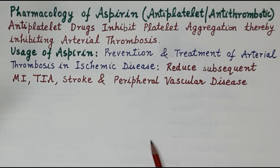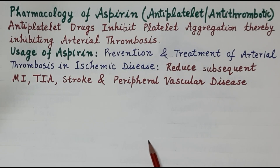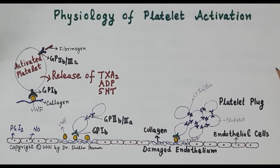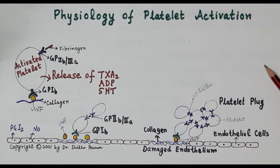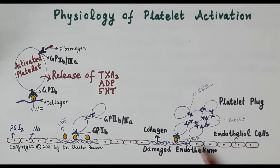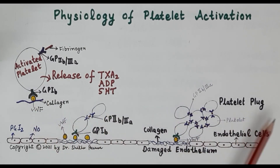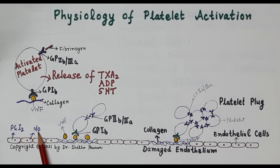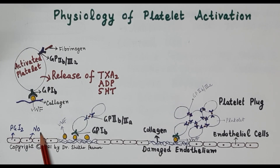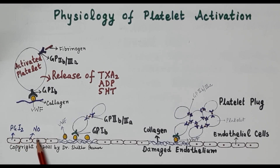To understand the antiplatelet mechanism of action of aspirin, let us first recapitulate the physiology of platelet aggregation. This slide explains platelet aggregation physiology. The tunica intima is made up of endothelium — the red-colored endothelial cells — and blue-colored platelets circulate in the blood. Prostacyclin (PGI2) and nitric oxide are both strong inhibitors of platelet aggregation and activation, and they are synthesized and released by the endothelium.